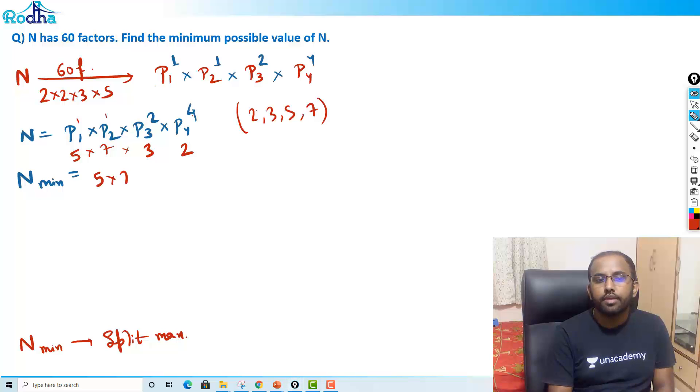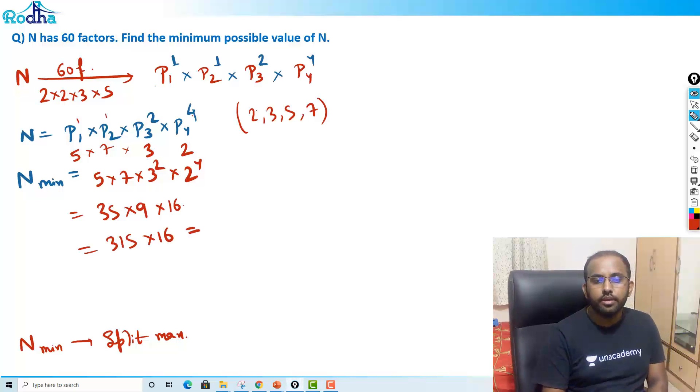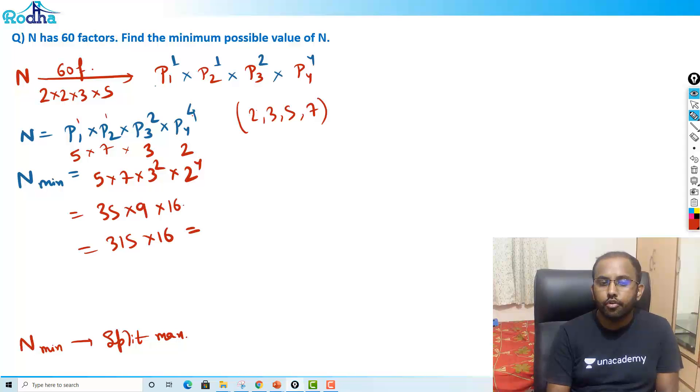My answer is 5 × 7 × 3² × 2⁴. It is 35 × 9 = 315, then 315 × 16. So basically 315 × 16 is 4,800 and 240, that is 5,040. So 5,040 is the answer.